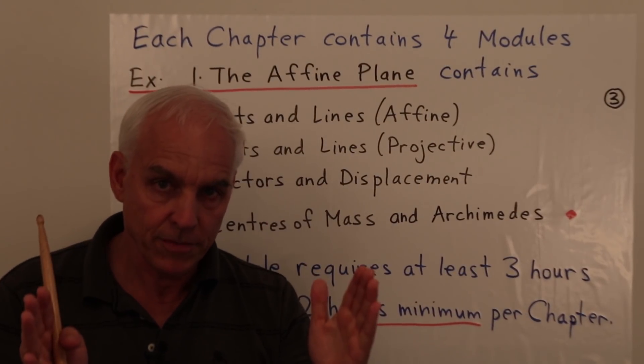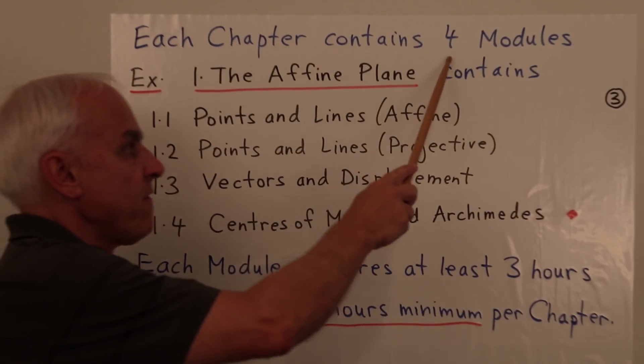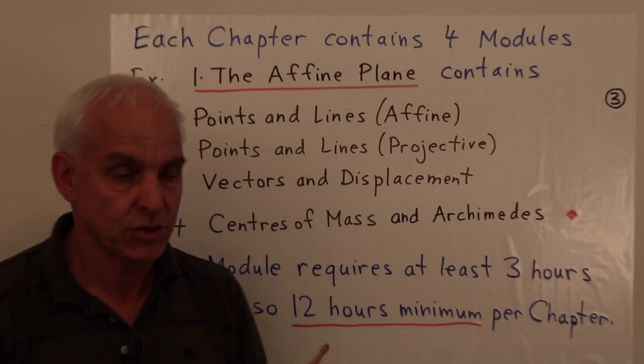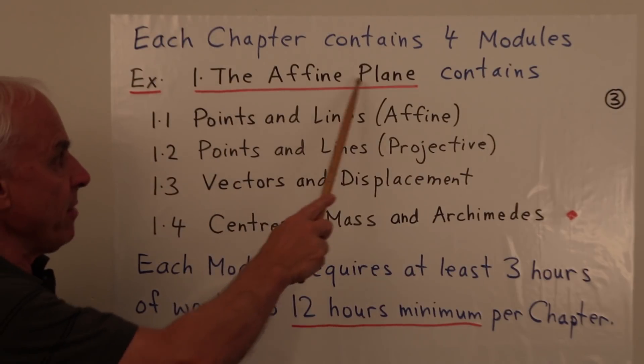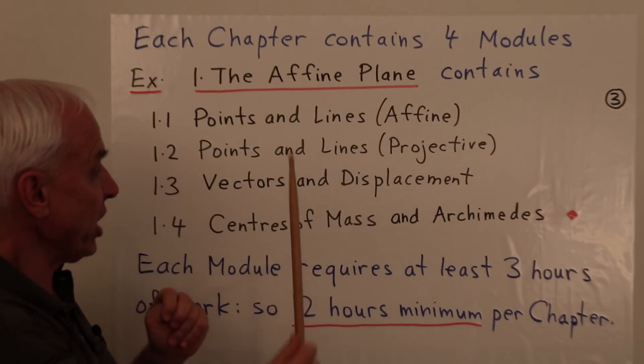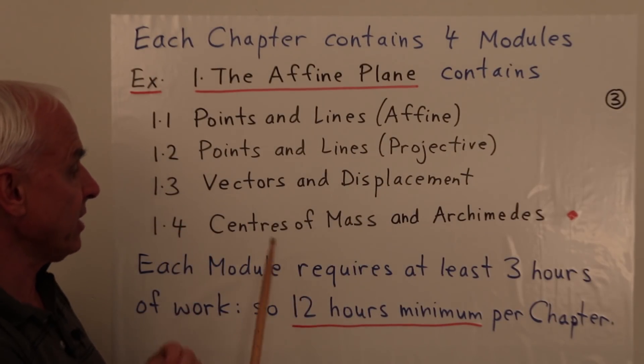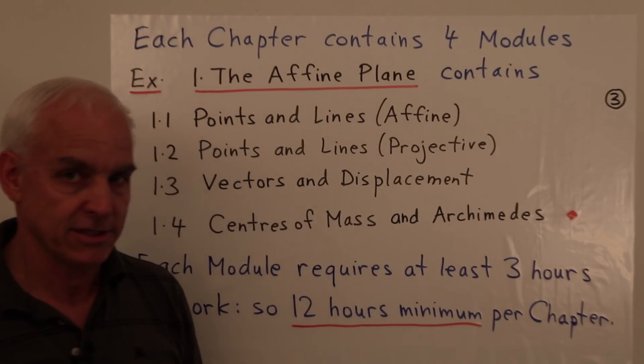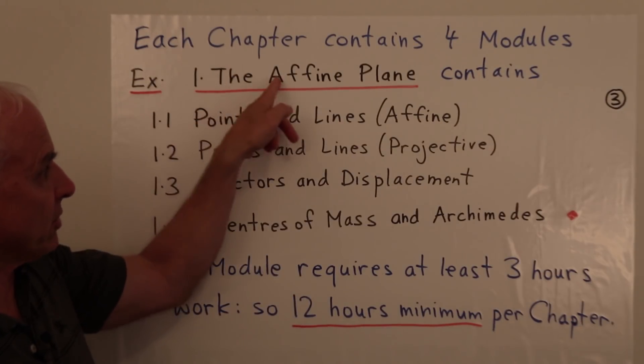Each chapter is going to consist of four modules. For example, the first chapter, the affine plane, will contain the four modules: points and lines affine, points and lines projective, vectors and displacement, and centers of mass and Archimedes. Four modules belong to one chapter.